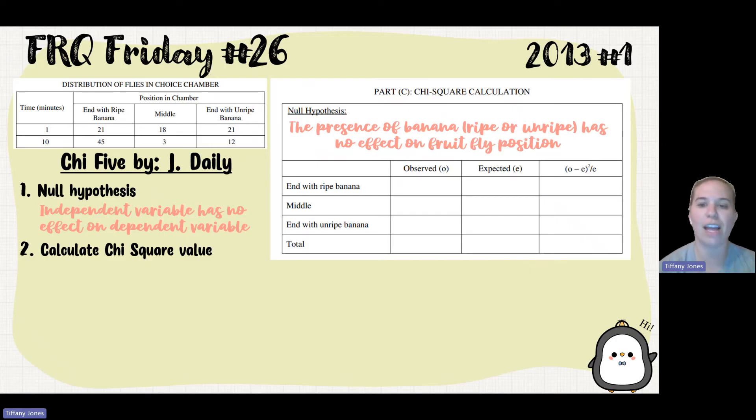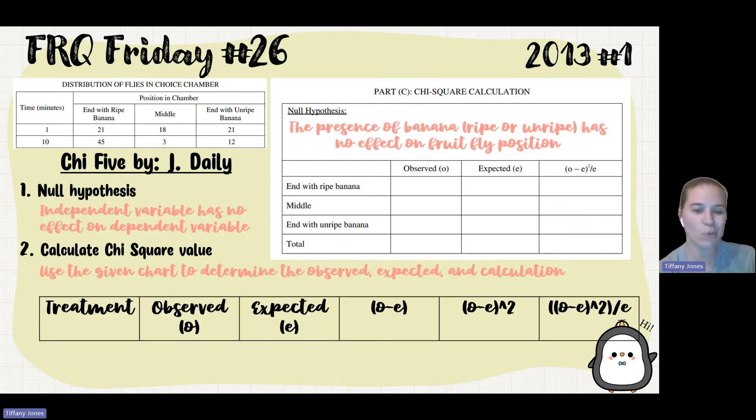And so the next thing I'm going to do is I'm going to calculate my chi-square value, and so I'm going to use this given chart, my observed, my expected, and then my whole calculation to figure out what the chi-square value is going to be for this. Now I use this other chart that I teach my students, and I'm going to get into that one in just a second.